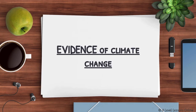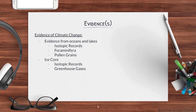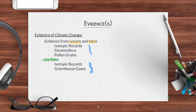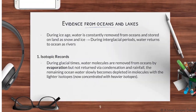When we look at the evidence of climate change, we're looking at a few sources that show that over time the climate has actually changed. The first evidence comes from oceans and lakes. The other source is through ice cores. I've broken it down into isotopic records and greenhouse gases for ice core, and for oceans and lakes we have isotopic records, foraminifera, and pollen grains.